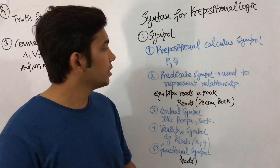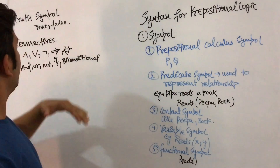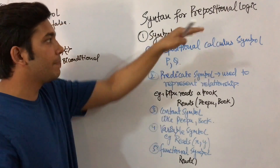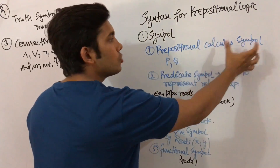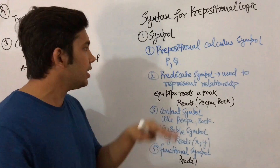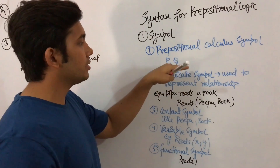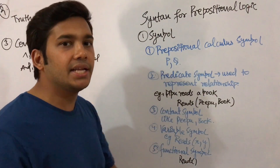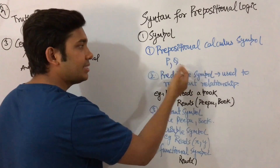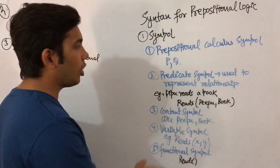The syntax for propositional logic has three major components: symbols, truth symbols, and connectives. The first type is symbols, and there are five types of symbols in propositional logic. The first are propositional calculus symbols like P and Q, which are used to represent entities — for example, P can represent Ram and Q can represent Gita.